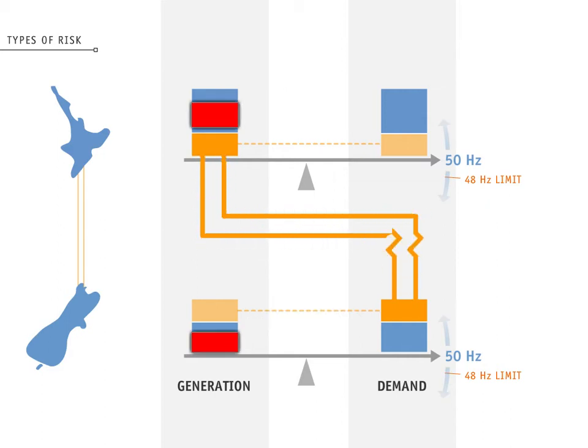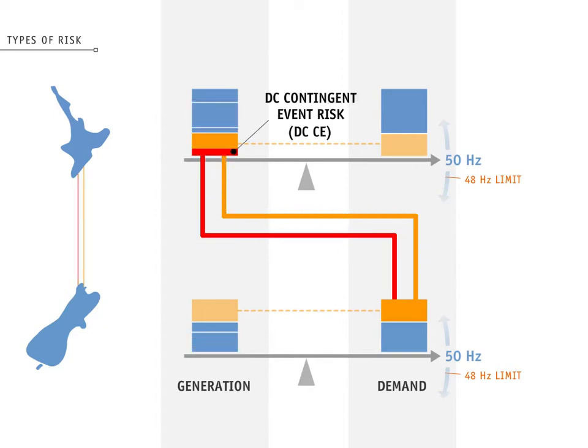The North and South Islands have independent AC risks. When both HVDC poles are in service, a DC contingent event, or DC-CE, is defined as losing a single HVDC pole. If this happens, more power can normally be put on the remaining HVDC pole to help compensate for the loss.